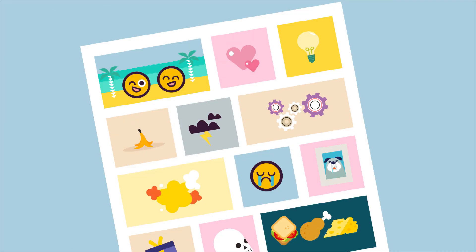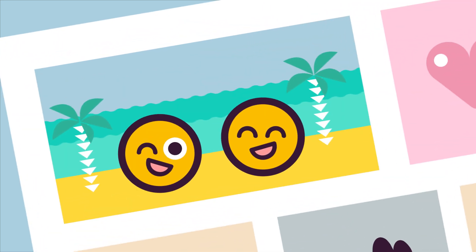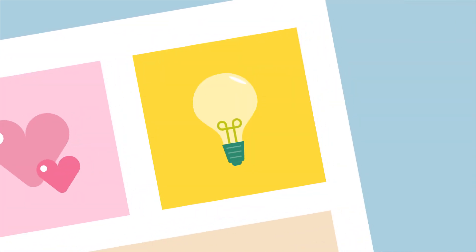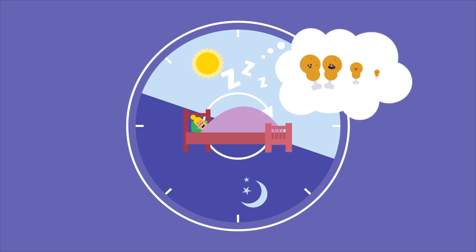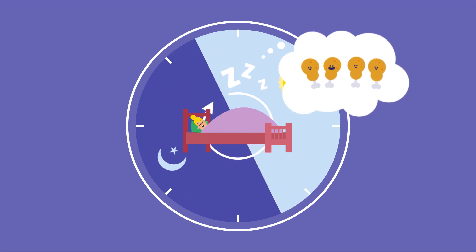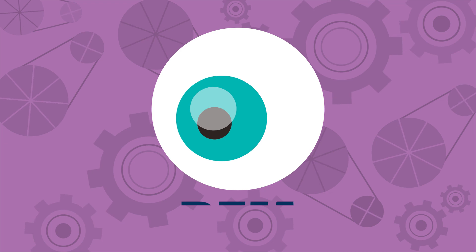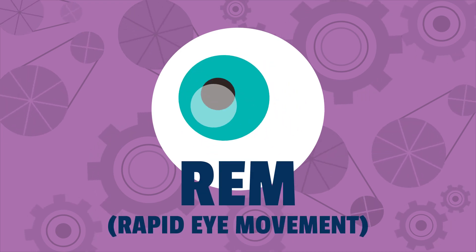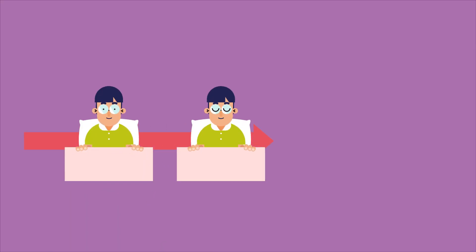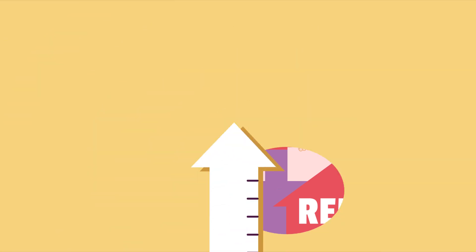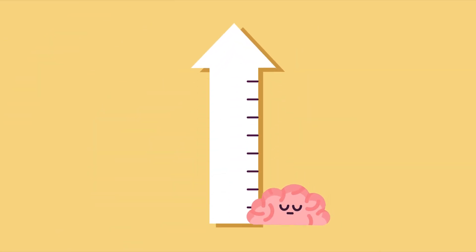A dream can be explained as a succession of sensations, emotions, ideas and images that occur involuntarily in a person's mind during certain stages of sleep. It's during the REM or rapid eye movement stage of sleep that dreams usually occur, because this is when brain activity is high and most resembles that of being awake.